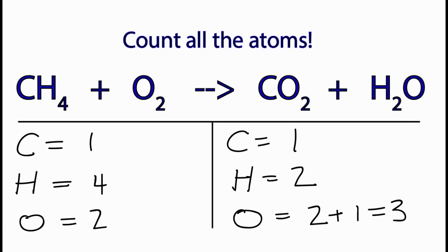I'll start by balancing the hydrogens. If I put a two in front of this hydrogen, two times two, that'll give me four. And that'll fix the hydrogens. But now I have two oxygens plus two times one, two oxygens. That gives me a total of four oxygens.